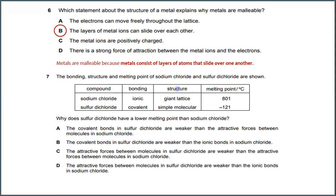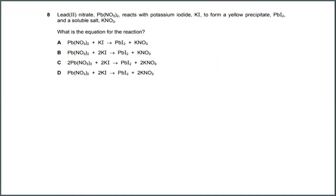The bonding structure of sodium chloride and sulfur dichloride are shown. Why does sulfur dichloride have a lower melting point than sodium chloride? The answer for this would be D: the attractive forces between molecules in sulfur dichloride are weaker than the ionic bonds in sodium chloride.